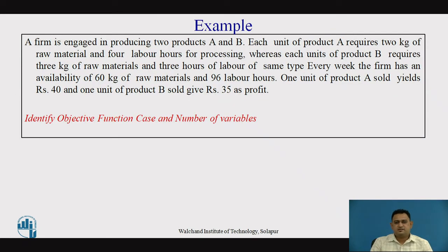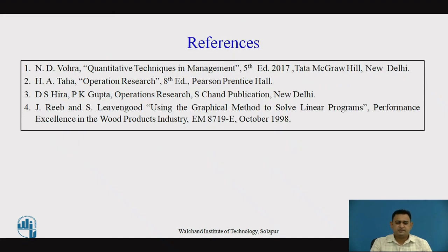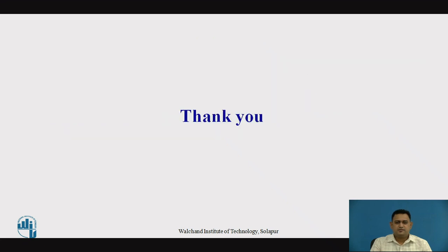Now let us take a simple example — go through the example, identify the objective function and the number of variables, take a pause and read it properly, and define the answer. The objective function of the particular example is to maximize the profit, and the number of decision variables involved are two — one for product A and one for product B. These are the references for today's session. Thank you.